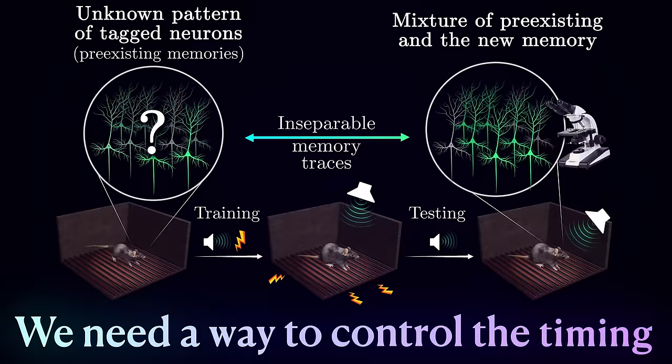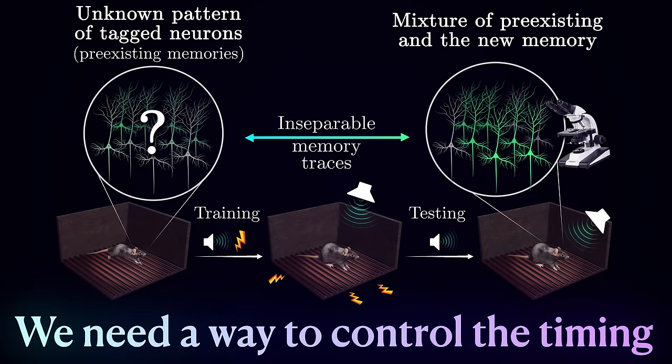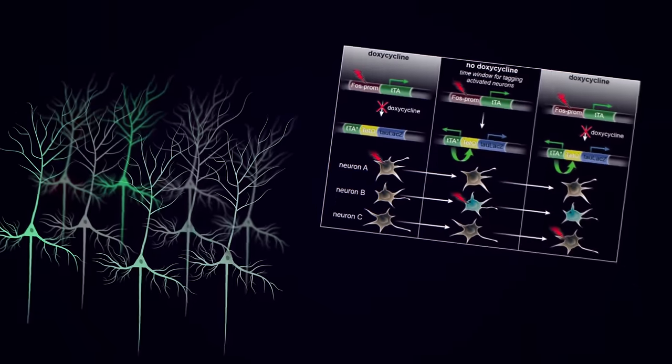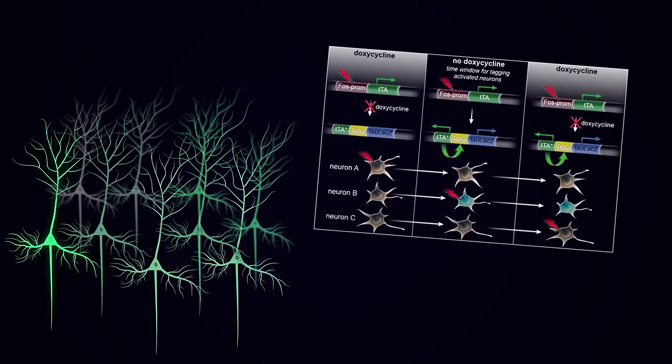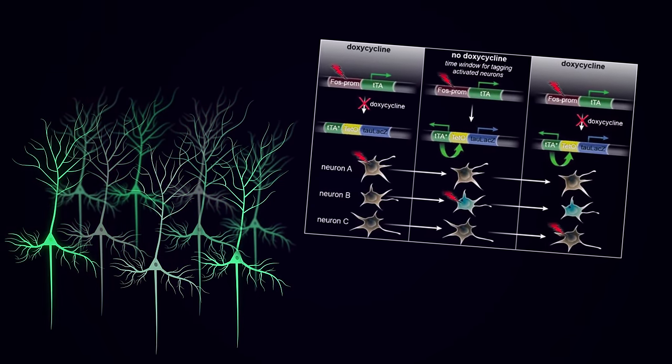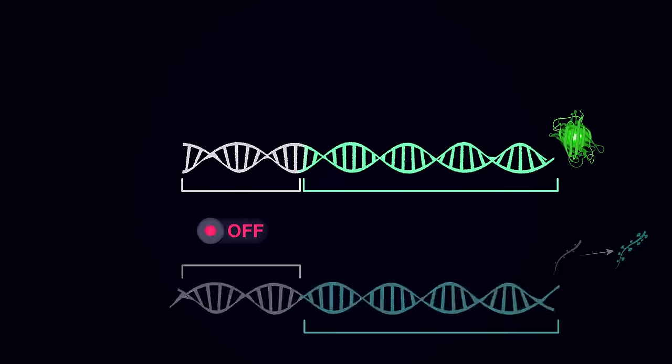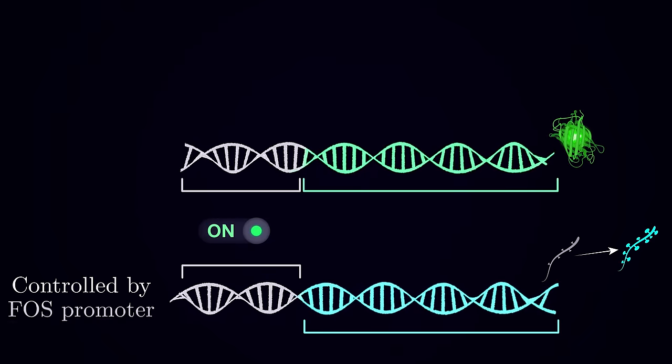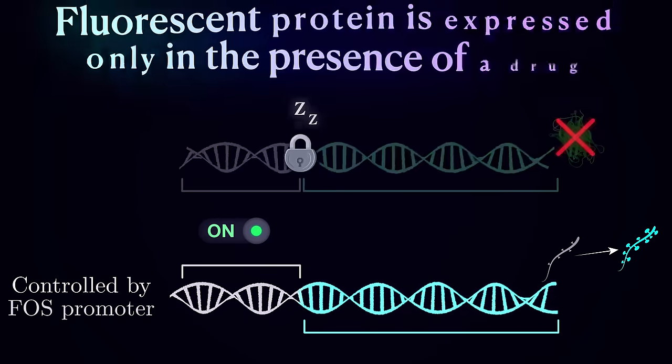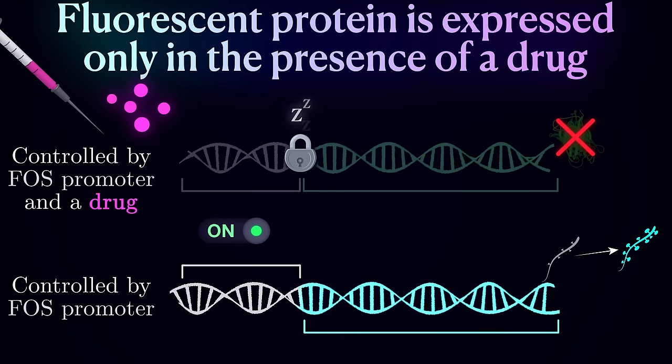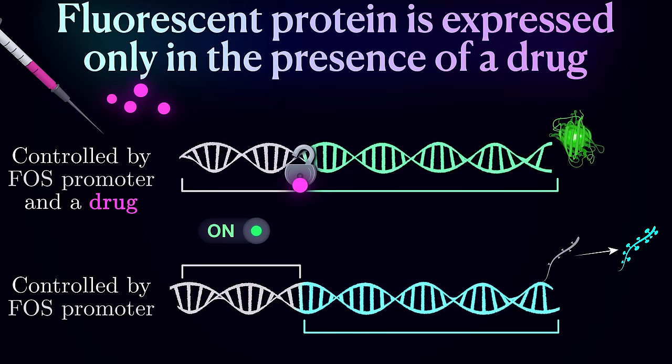So, ideally, we need to be able to control the timing of this tagging process and transiently turn it on for the duration of the experiment, to isolate the engram for a single memory. There exists a handful of approaches which I'm not going to describe in detail, but on a high level, it is possible to engineer this genetic machinery to lie dormant and activate only upon the presence or absence of a certain chemical compound.